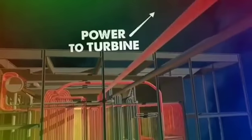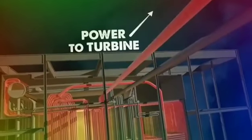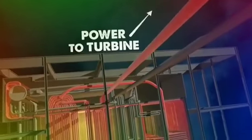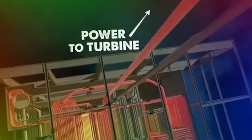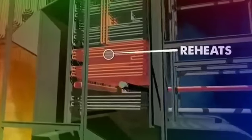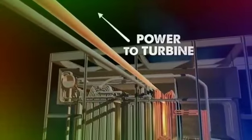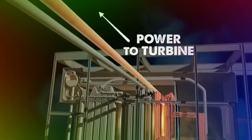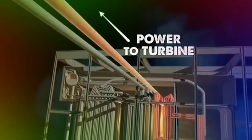This dry superheated steam then exits the boiler, passing through a steam locker and ultimately providing power to the spinning turbine, which generates electricity. Finally, exhaust steam, now at a lower temperature and pressure, is sent back to the boiler through a dedicated reheat stage. This reusable steam is brought back up to operating temperature before returning to the turbine, providing additional power through a secondary stage.